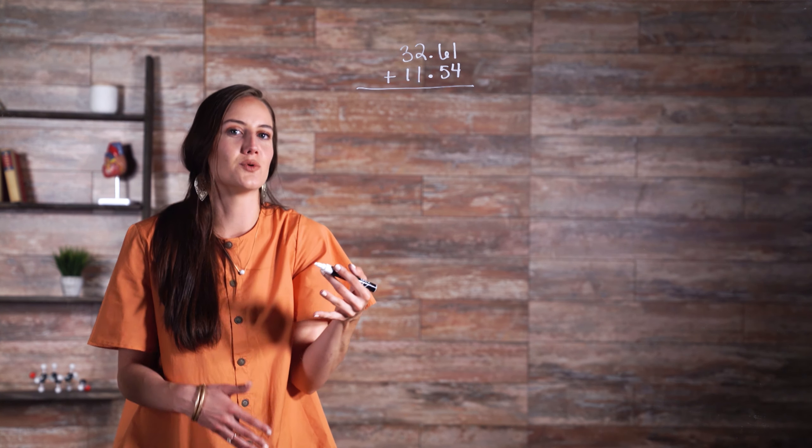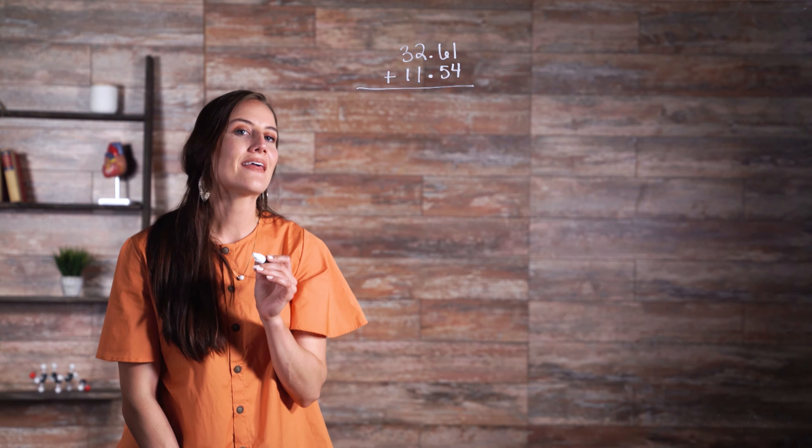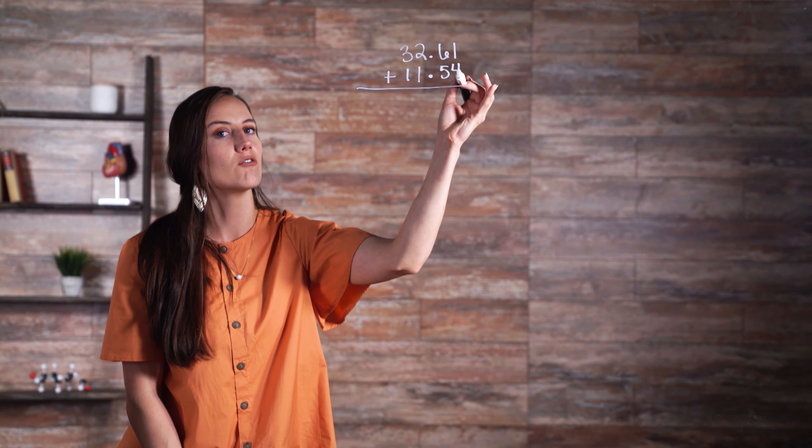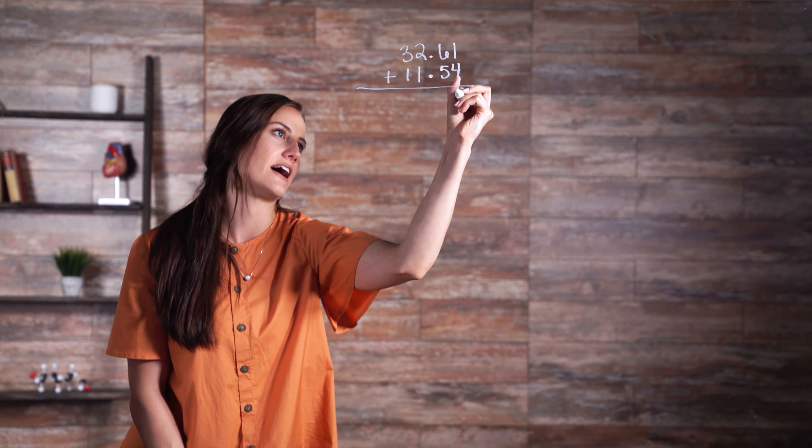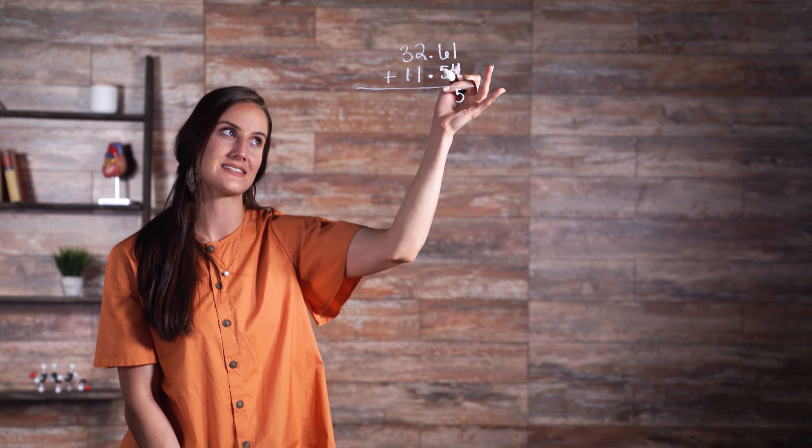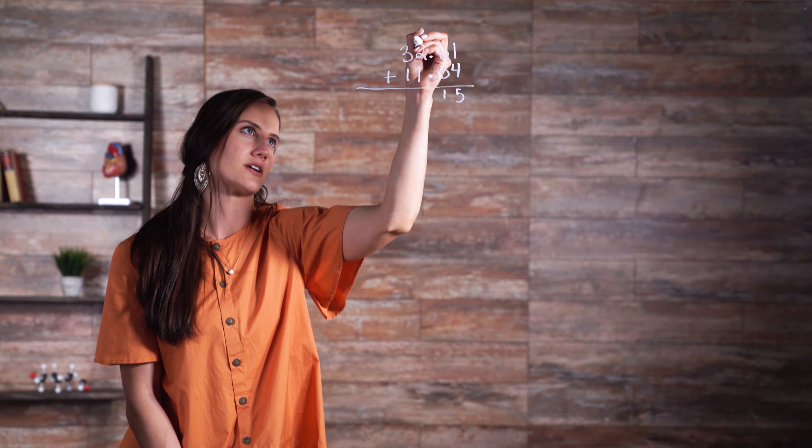Once you have your two decimals lined up, you begin to solve the problem as you would with any addition problem. First, we add the two numbers in the hundredths place, 1 and 4, which gives us 5. We then add 6 and 5, which are in the tenths place, and that gives us 11. So we carry the 1.